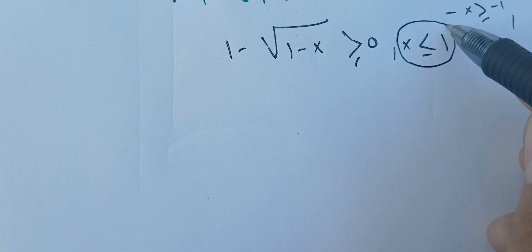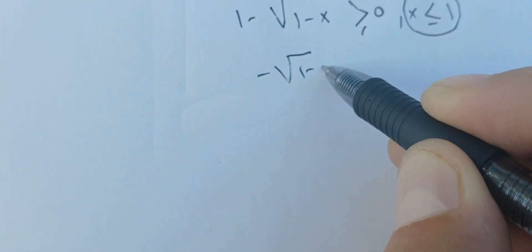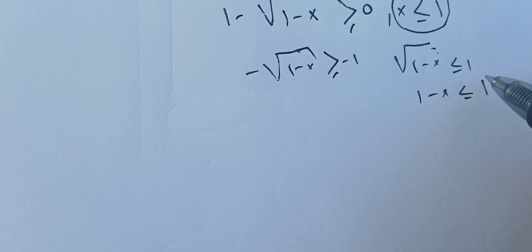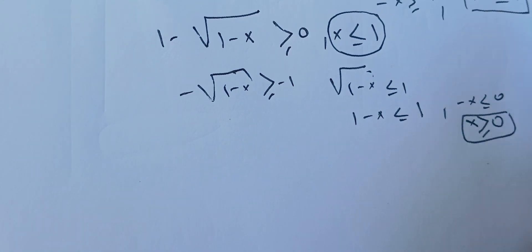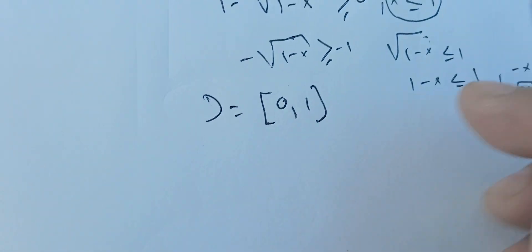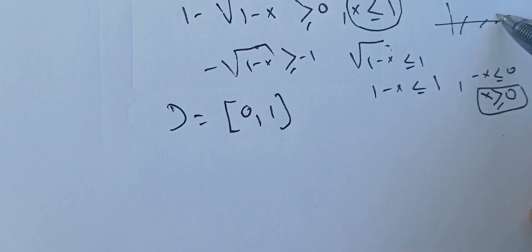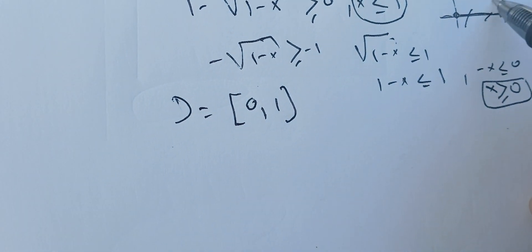The next condition is that 1 − √(1−x) must be greater than zero, with x < 1. If we add −1 to both sides and multiply by −1, we get 1 − x < 1. Adding −1 to both sides gives −x < 0, and multiplying by −1 gives x > 0. So we have x > 0 and x < 1, meaning the domain is the open interval (0, 1).